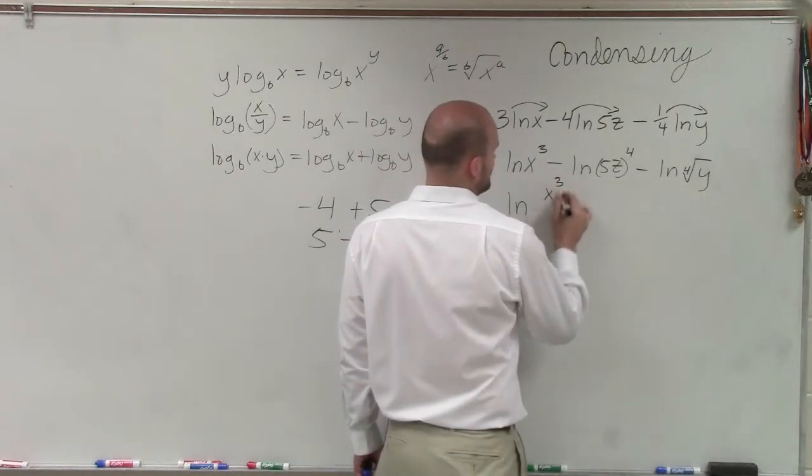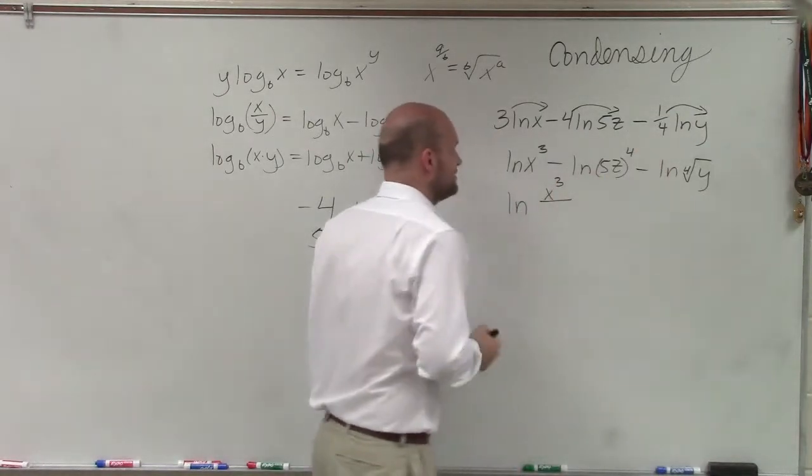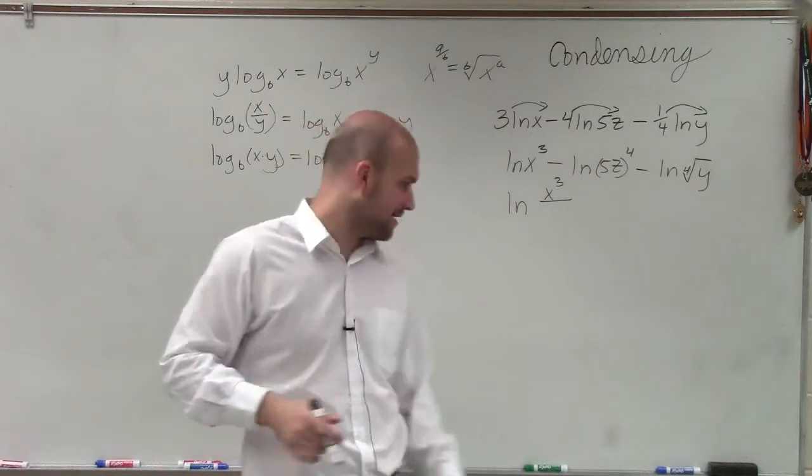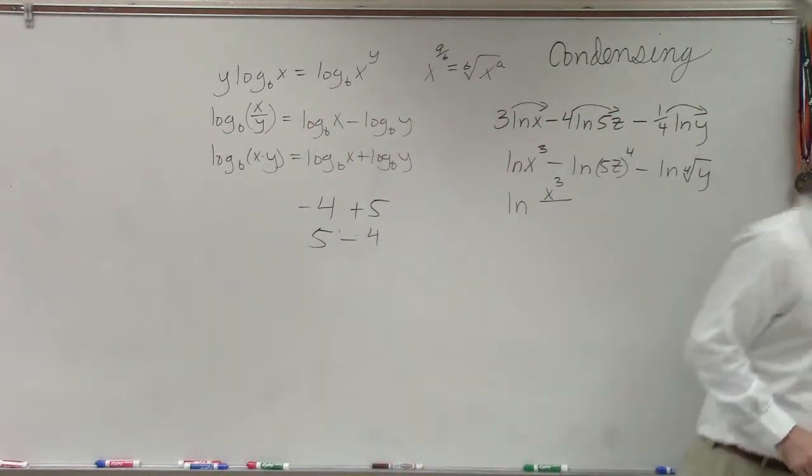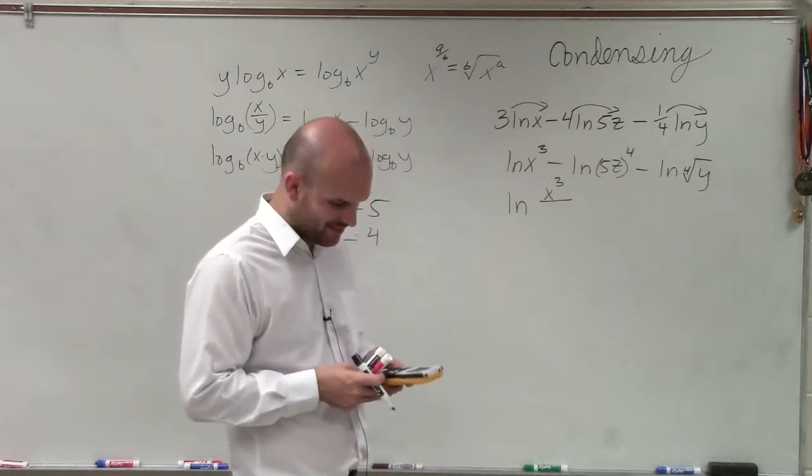So I have ln of x cubed divided by, now I can simplify 5 to the fourth power. And I believe 625, 5 third is 125, so that'd be 625.